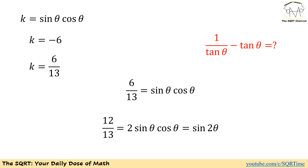Now remember what we are going to find — we want to find 1 over tan of theta minus tan of theta. Here we are going to use another identity. Remember, sine of 2 theta can be represented as 2 sine of theta cosine of theta. We already have sine of theta cosine of theta equals 6 over 13, so we can say that sine of 2 theta equals 12 over 13.